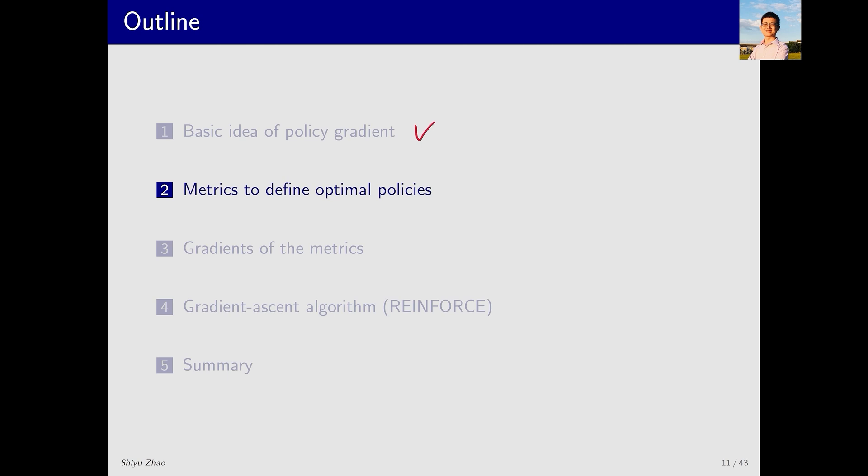We introduced the basic idea of policy gradient just now. I believe the idea is easy to understand. Now let's dive into a more detailed explanation. It will be divided into three parts. The first part is about the metrics for optimization. The second part is about the calculation of the gradient of the metrics. The third part is about how to use this gradient for optimization to obtain the optimal policy.